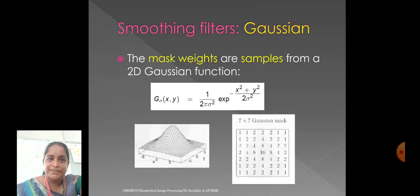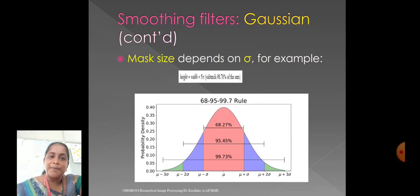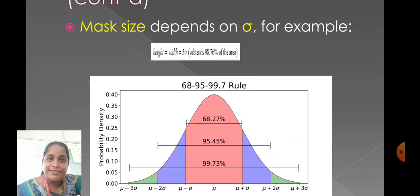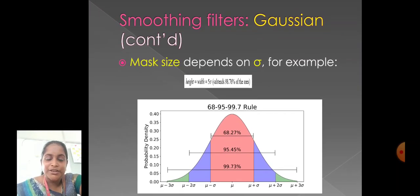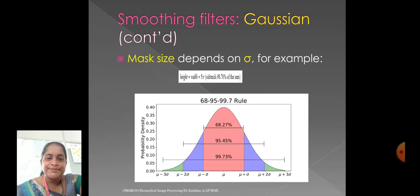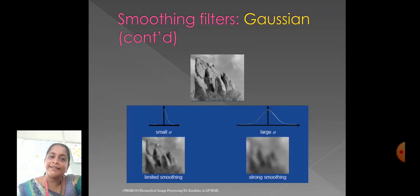And while coming into Gaussian filters, the mask weights are samples from a 2D Gaussian function. It is g sigma of x, y, it is equal to 1 by 2πσ² exponential minus (x² + y²) by 2σ². Here, the mask size depends on sigma. For example, height equals width equals 5 sigma. Substance, 98.76 percentage of the area. Here, the plot is shown here.